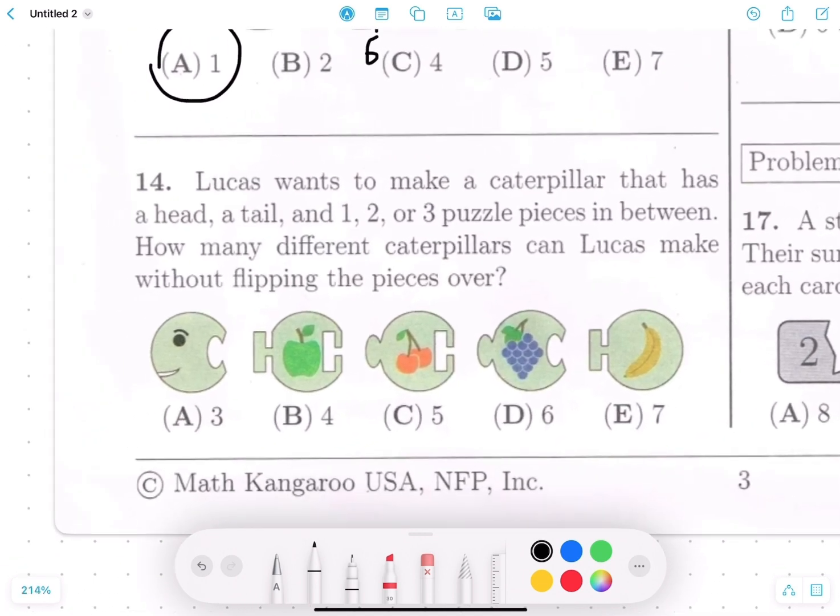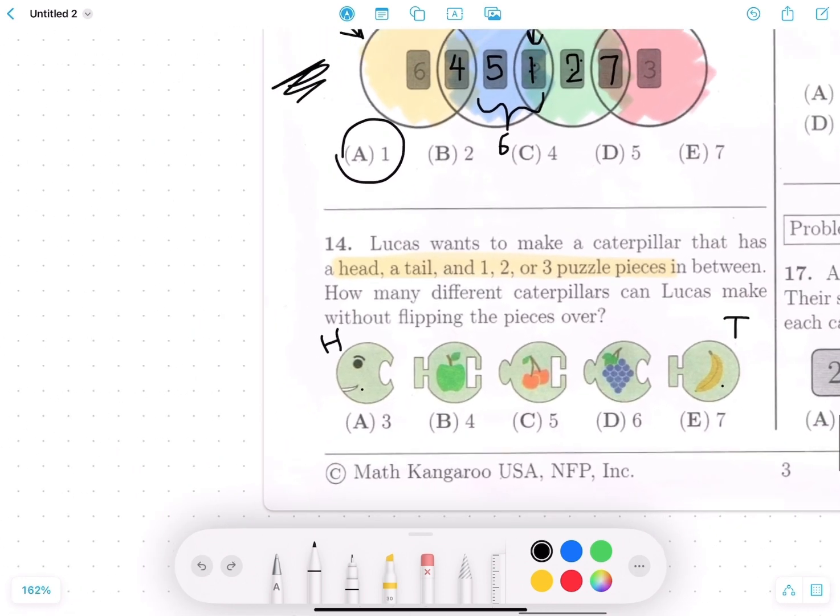Number 14. Lucas wants to make a caterpillar that has a head, a tail, and one, two, or three puzzle pieces in between. How many different caterpillars can Lucas make without flipping the pieces over? Okay. So a head, a tail, and one, two, or three pieces in between. Well, this is definitely the head. None of the other ones can be the head. And this is definitely the tail. So we have head, tail, and now we have to figure out some combination of these three pieces in the middle.